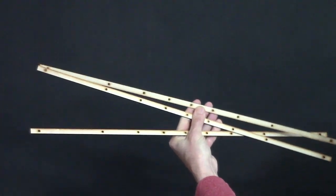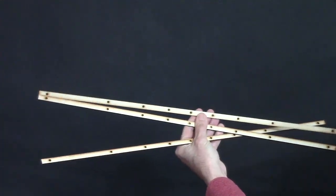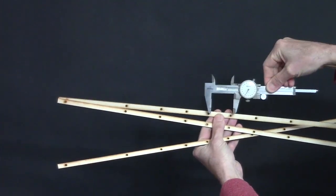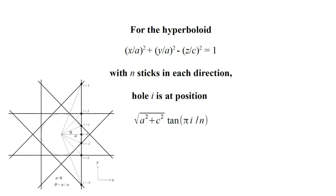The first method is to laser cut some thin wooden slats with holes in them. Knowing the right spacings between the holes is crucial. You can just download my laser cutting template, or I can show you how to calculate the hole spacings for any desired size and shape of hyperboloid.